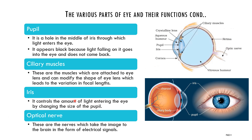Next is the optic nerve. These are the nerves which take the image to the brain in the form of electrical signals. The image forms on the retina and is converted into electrical signals. With the help of the optic nerve, the electrical signals reach the brain, and the brain recognizes the image. For example, if a dog is in front of you, the image of the dog forms on the retina, travels as electrical signals to the brain, and the brain recognizes it as a dog.